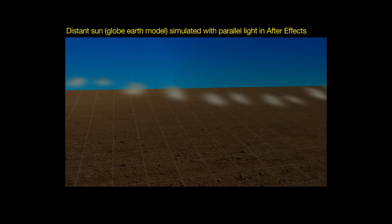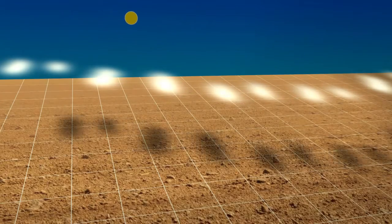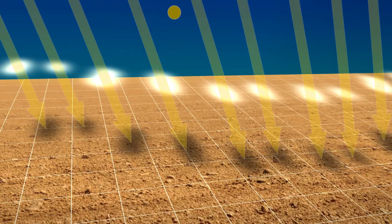After Effects has the option to make a parallel light source. As the sun is supposedly 96 million miles away, 155 million kilometers, it's pretty much parallel. As you can see, when I draw lines from the shadows on the ground through to the clouds, they kind of diverge or converge at the bottom.